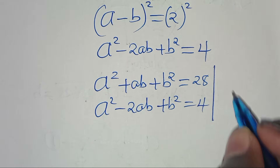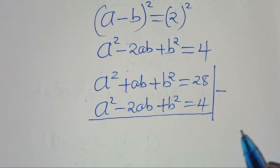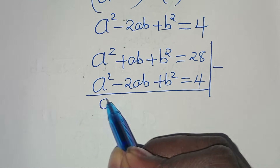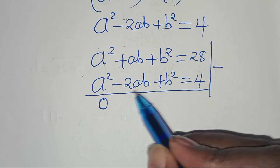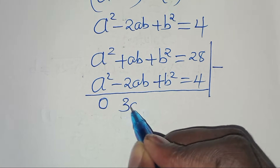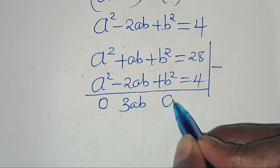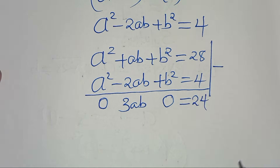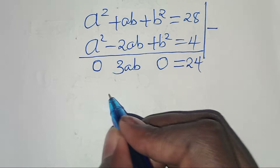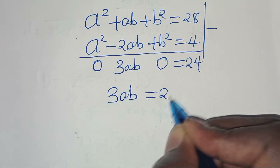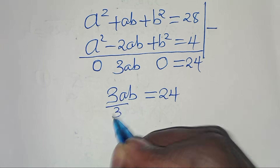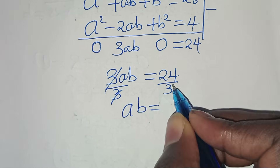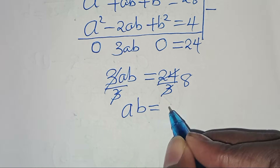Subtracting the second equation from the first: the a squared and b squared terms cancel, leaving 3ab equals 28 minus 4, which equals 24. Dividing both sides by 3, we get ab equals 8.